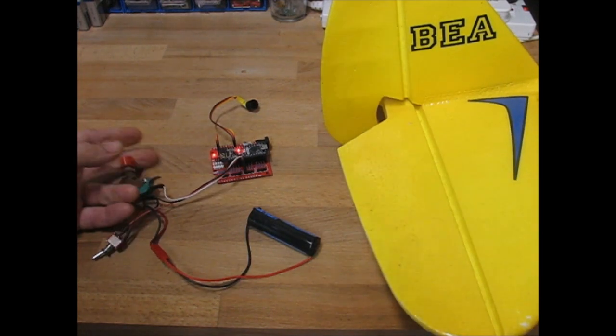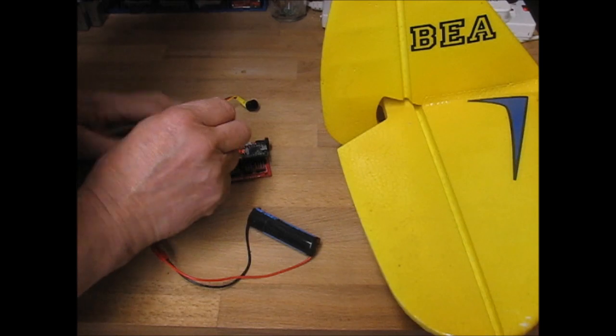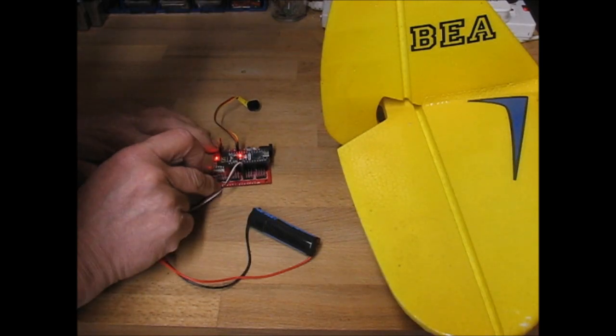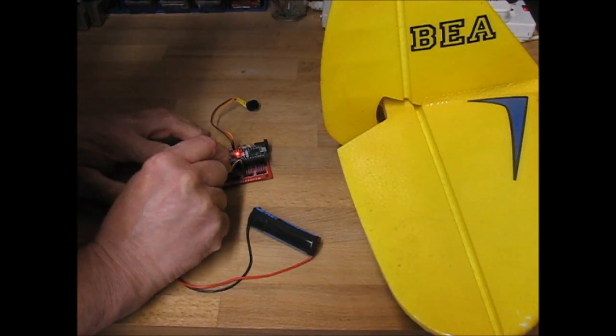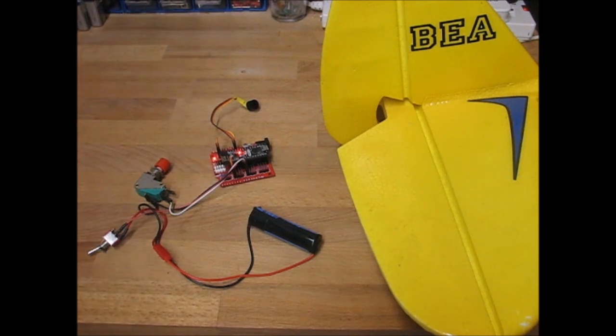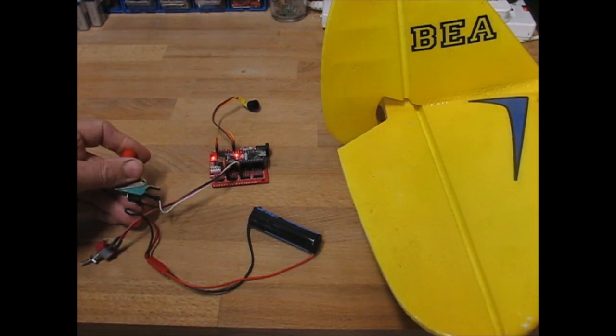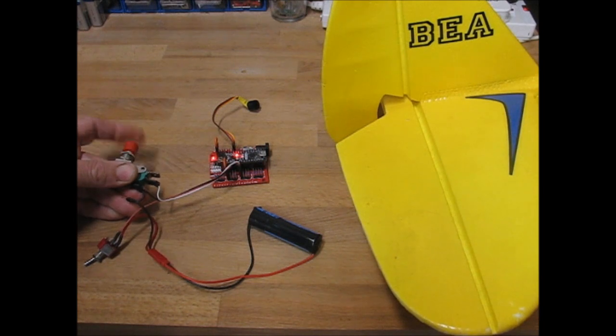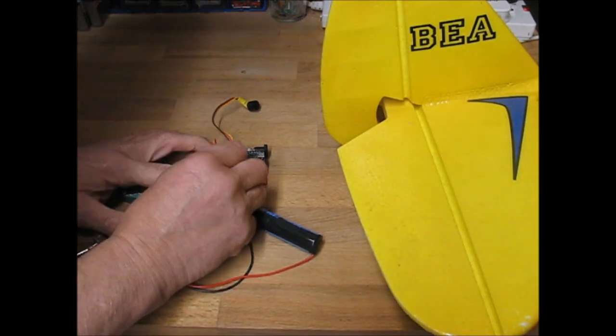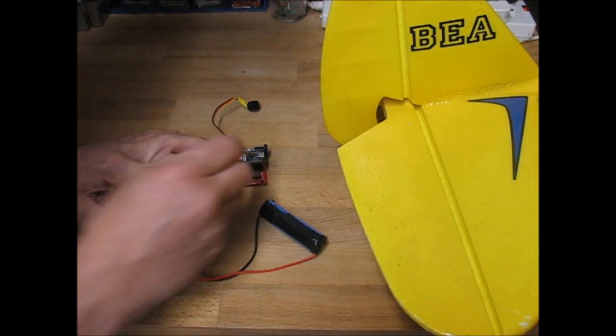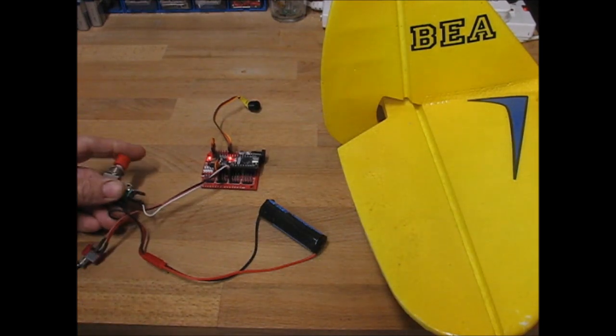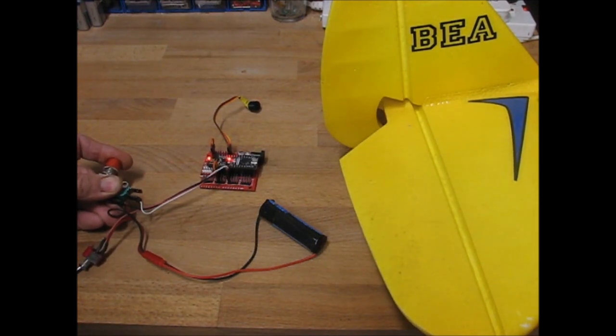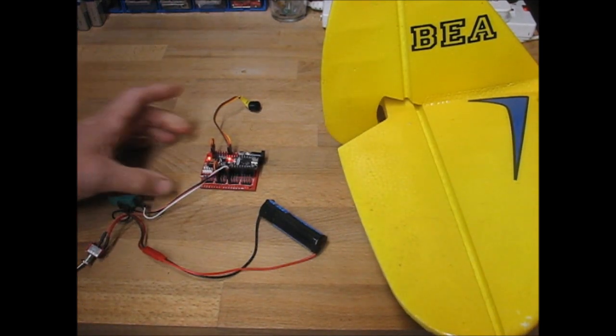Now at the moment rudder is moving in the right direction there, but if it was the wrong way we can either drop a link or flick a dip switch. So that's one for left. And similarly if I move that onto the next one that should reverse the elevator. So that's kicked down now. So you've got servo reversing.